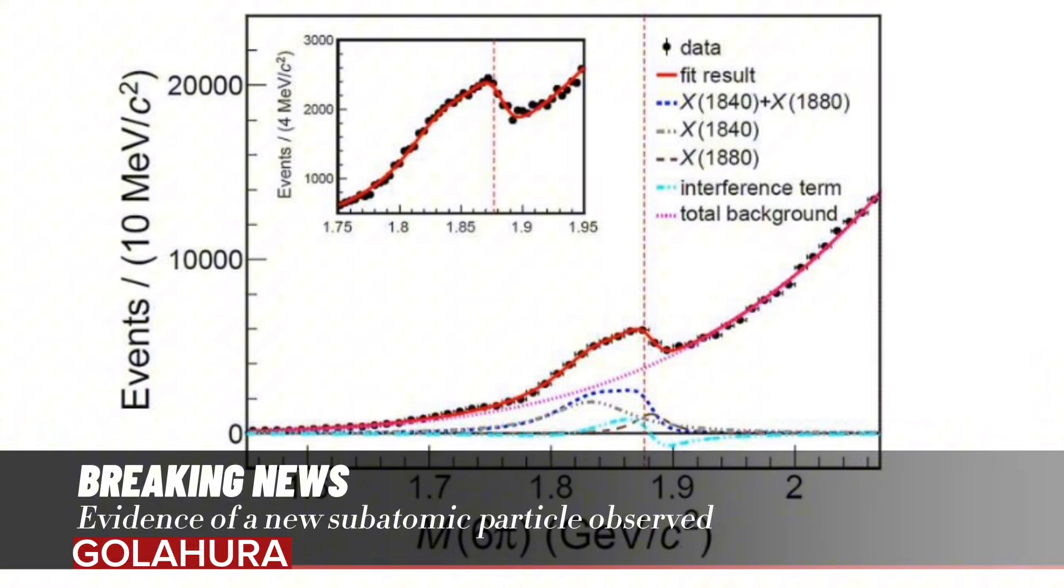An anomalous line shape of X(1840) near the p-pbar mass threshold was observed for the first time. After many attempts, it was found that the model with a coherent sum of two Breit-Wigner parameterizations could provide a good description of the data.